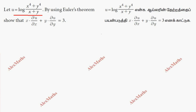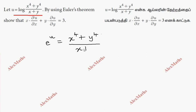So, if we remove log, the other side is e power u. So we have e power u equal to x power 4 plus y power 4, whole divided by x plus y.